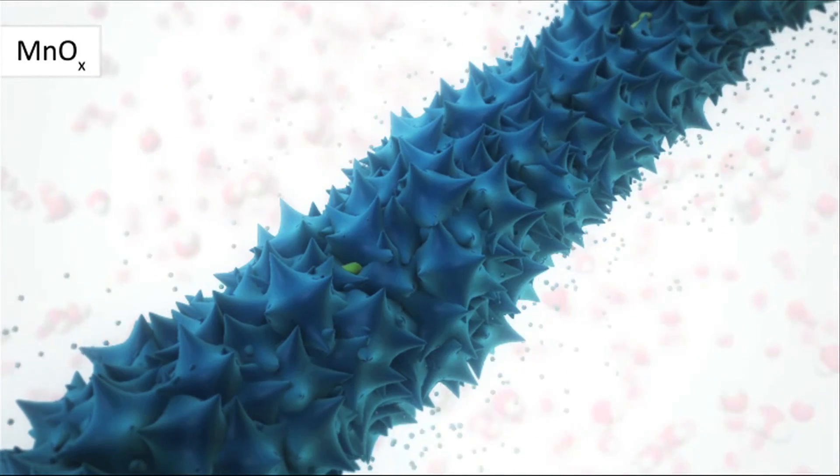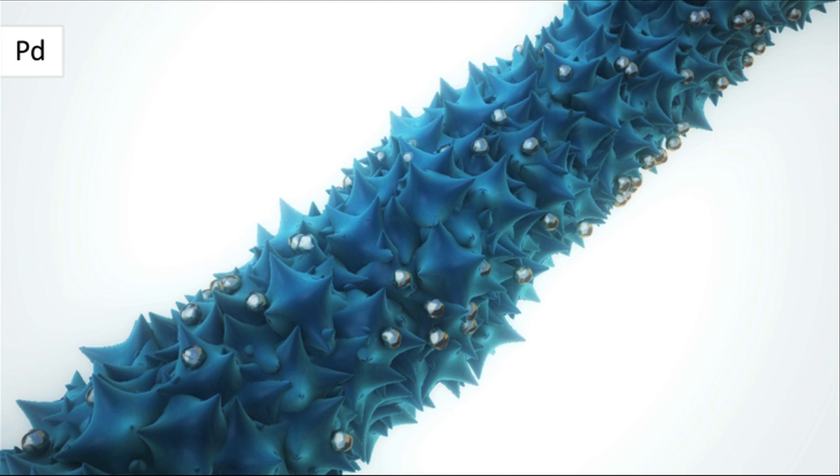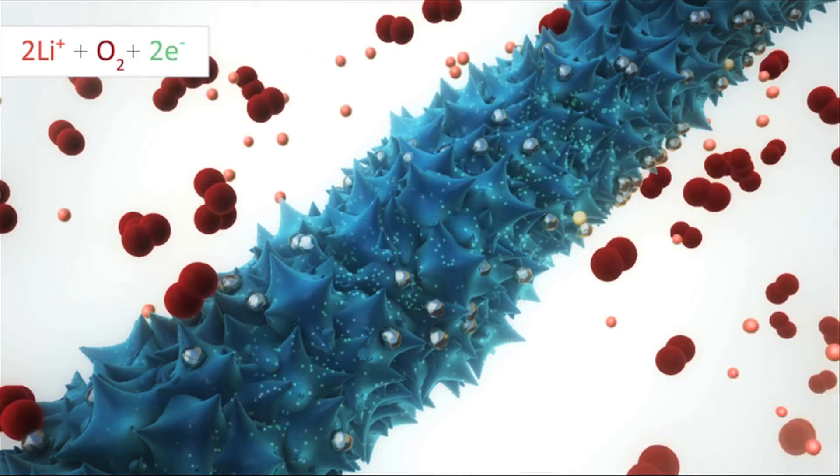These manganese oxide nanowires, when combined with a small amount of palladium, increase the catalytic performance of these materials. This whole structure can be used for a lithium oxygen battery electrode.